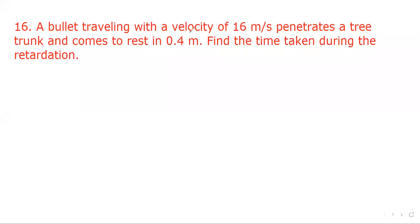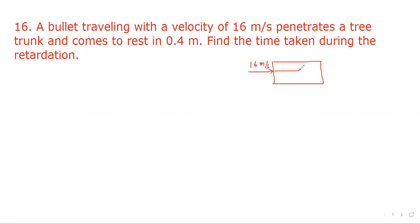A bullet traveling with a velocity of 16 meter per second enters a wooden block and comes to rest in 0.4 meter. Find the time taken during the retardation. The bullet enters at a speed of 16 meter per second and by covering a distance of 0.4 meter its velocity becomes zero.